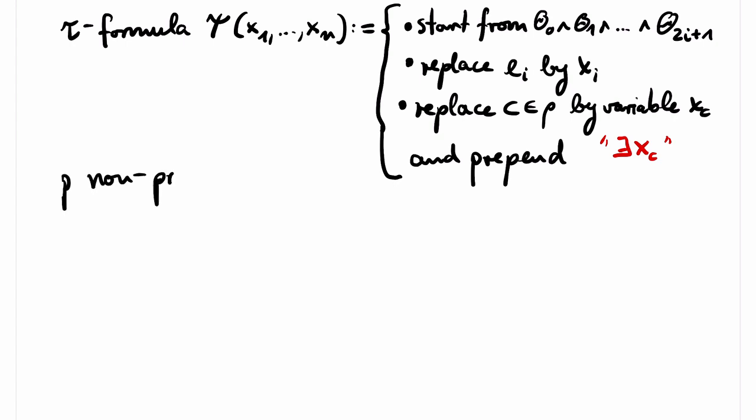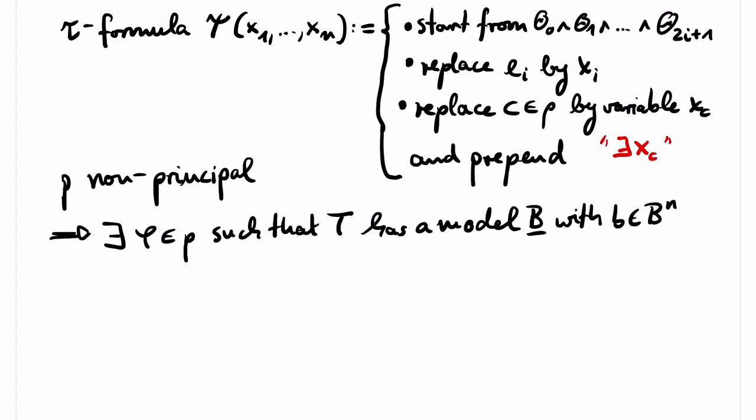Since the type P is non-principal by assumption, there exists a formula phi in P such that T has a model B with an n-tuple b such that B satisfies psi of b but not phi. Otherwise, in every model of T, psi would imply every formula in P. And hence, psi would isolate P, in contradiction to the assumption that P is non-principal.